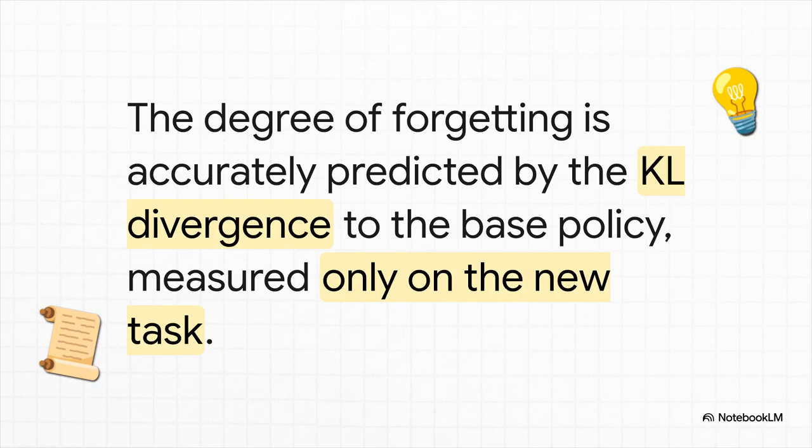This incredible discovery led them to propose what they call an empirical forgetting law. And it's as simple as it is powerful. The amount a model forgets is predicted by the KL Divergence. And here's the kicker. You only need to measure it on the new task data. This is a huge deal. It means you can predict forgetting without having to go back and tediously check all the thousands of old things the model used to know.